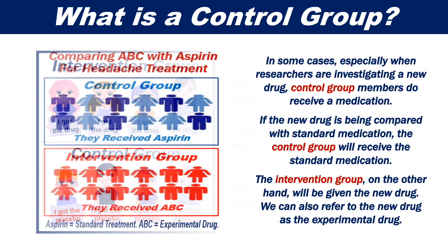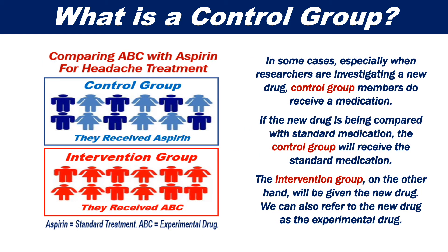In some cases, when researchers are investigating a new drug, control group members do receive a medication. If the new drug is being compared with standard medication, the control group will receive the standard medication. The intervention group, on the other hand, will be given the new drug.